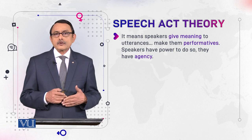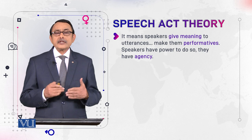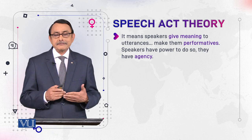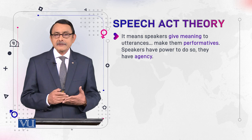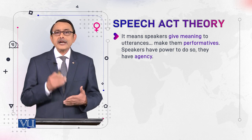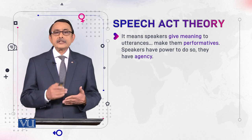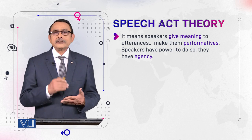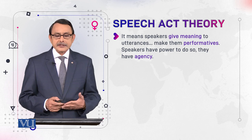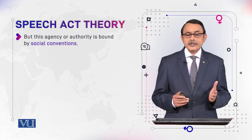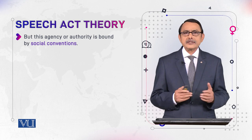Speakers have the power to do so, and this is called speaker agency — they have authority, they have power. Two technical terms are introduced here: one is performative, because we perform acts through speech; and second, because meaning is assigned by repeated use of utterances by speakers, we say speakers have agency — the power to assign meaning to utterances. But this agency or authority is bound by social conventions. It is not unbridled, unlimited, or uncontrolled agency.